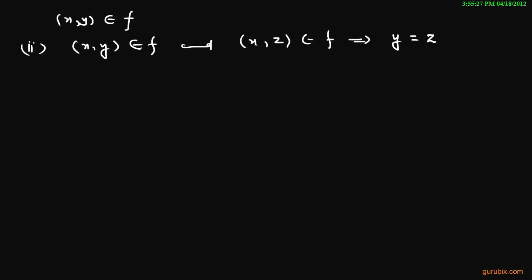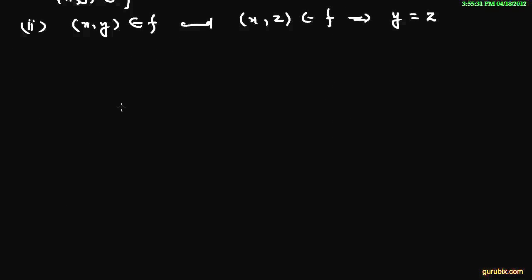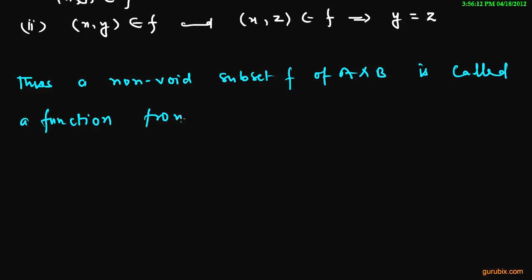Now let me make you understand in a proper way. Thus a non-void subset F of A cross B is called a function from A to B if each element of A has a unique image in set B.